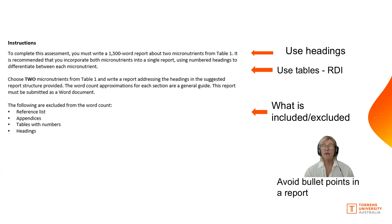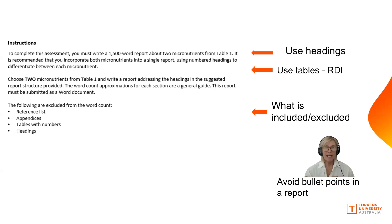To be clear about word count: if you've got RDIs with age groups in a table, that's all excluded — but words in a table are included. Numbers and data are excluded; words are included. Headings are also excluded.